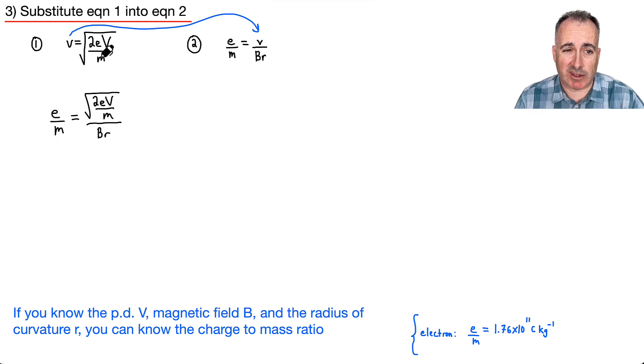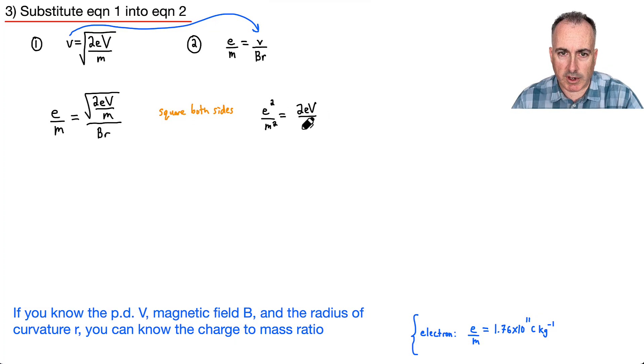I don't like this square root, so maybe I'll square both sides. So e squared over m squared equals, that'll get rid of the square root, so I'll have 2e capital V over m. And I've still got BR on the bottom, but those are going to be squared. So B squared times r squared. This square root got rid of, but this BR still has to be squared.